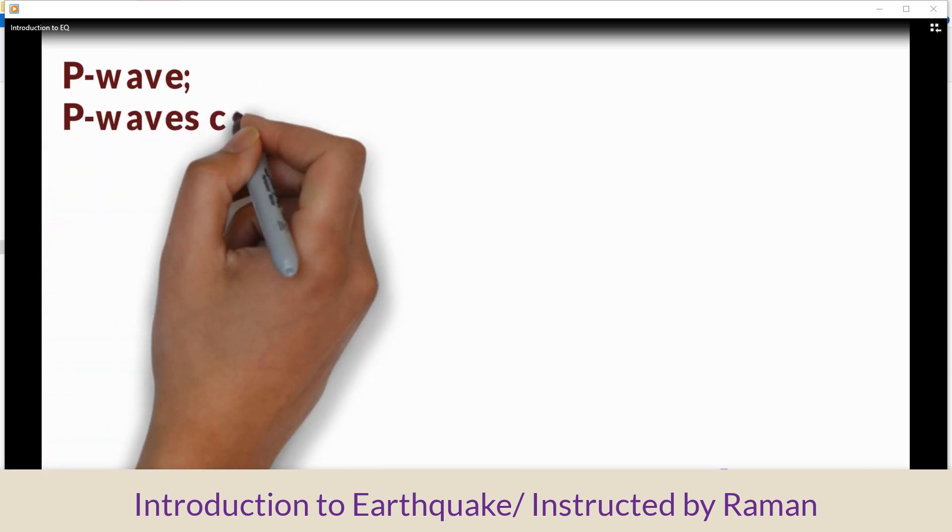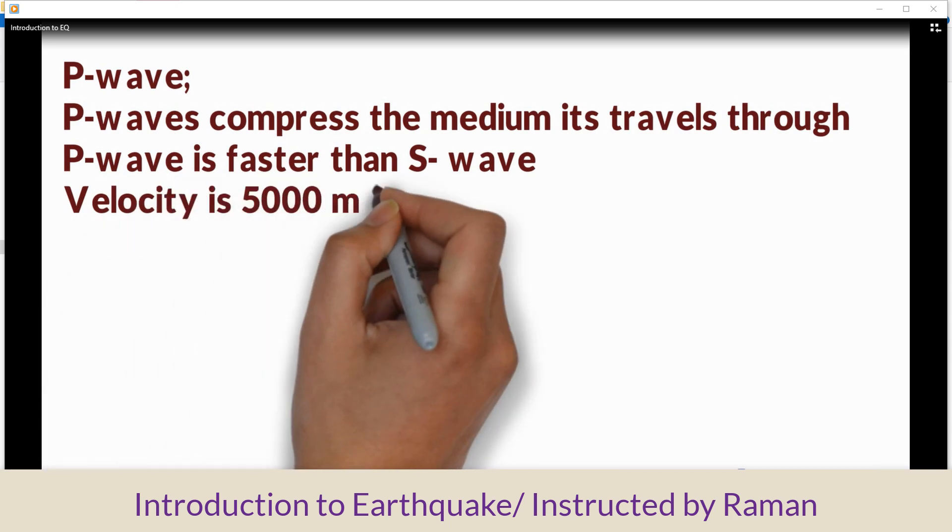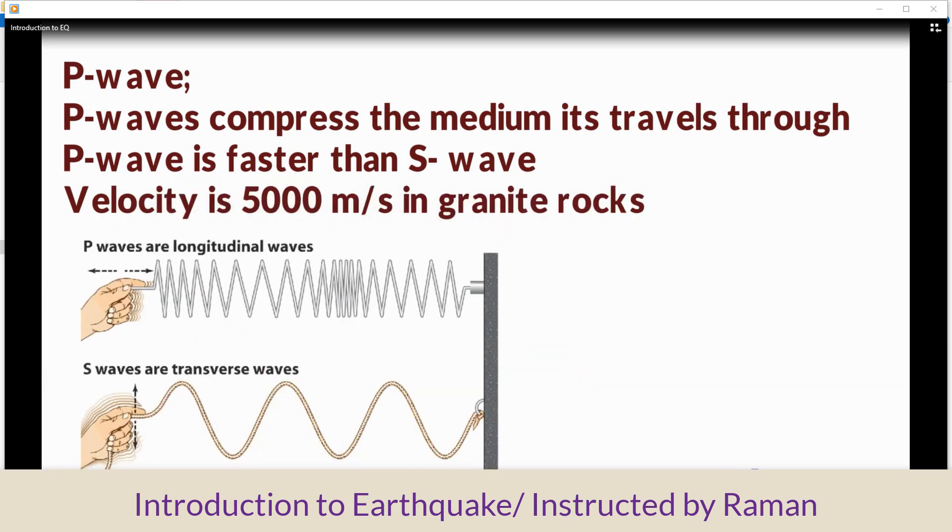P-wave or primary wave: The primary wave is a compression of the medium it travels through. P-wave is faster than S-wave, with a velocity of 5000 meters per second in granite rocks.